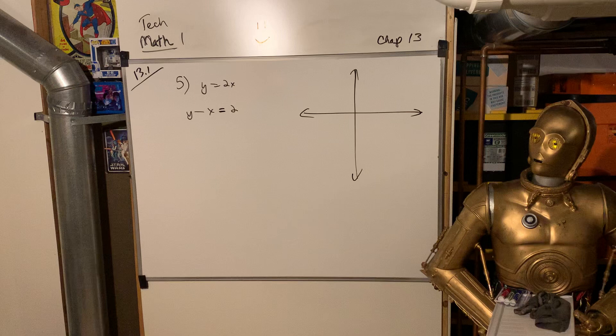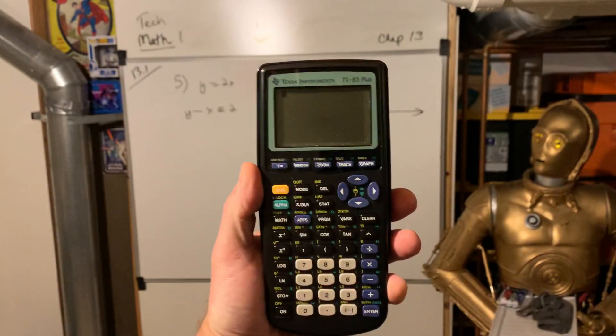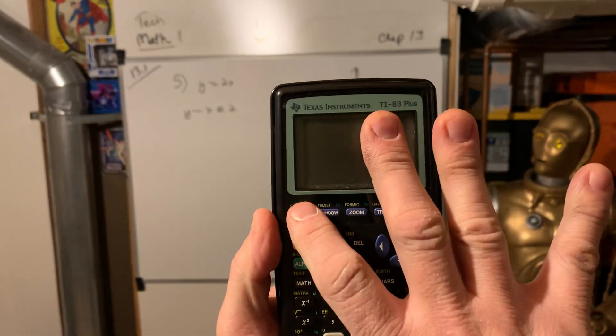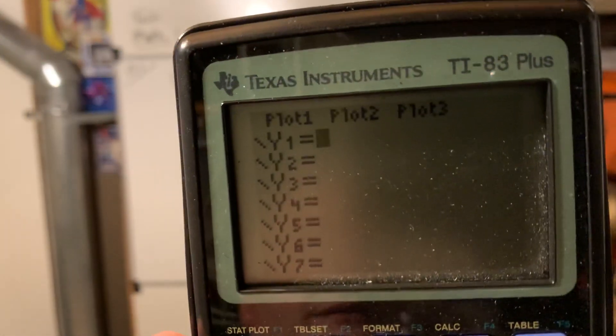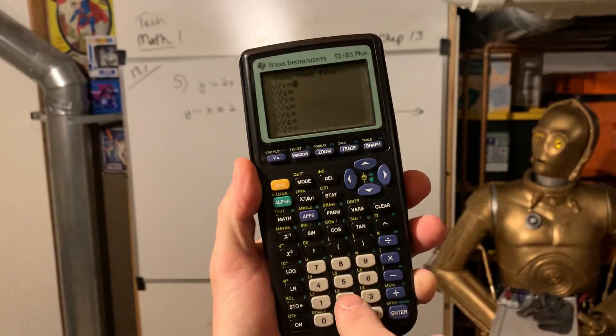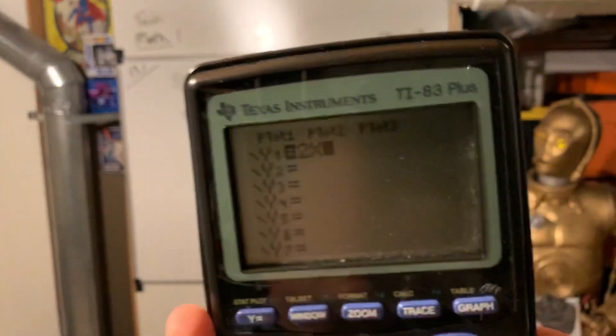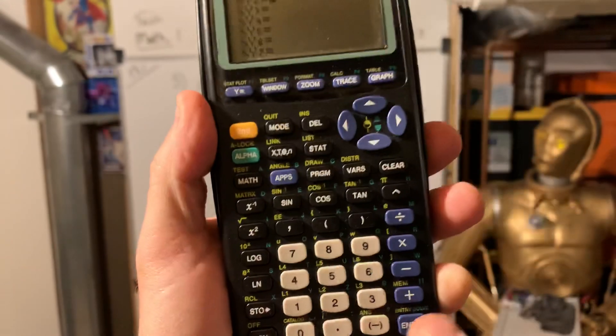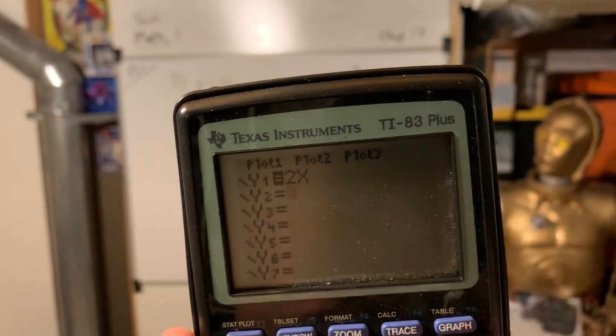In algebra, you may have done this by hand. Because we're in TechMath, we get to use our handy-dandy calculators, which make it a little easier. So we're going to go y is equal to - see the little y sub 1 popped up there? We're going to put in 2, the number 2, and then that's the variable button, x. So it says y equals 2x, and then you're going to hit enter. And when I hit enter, it bops it down to y sub 2.